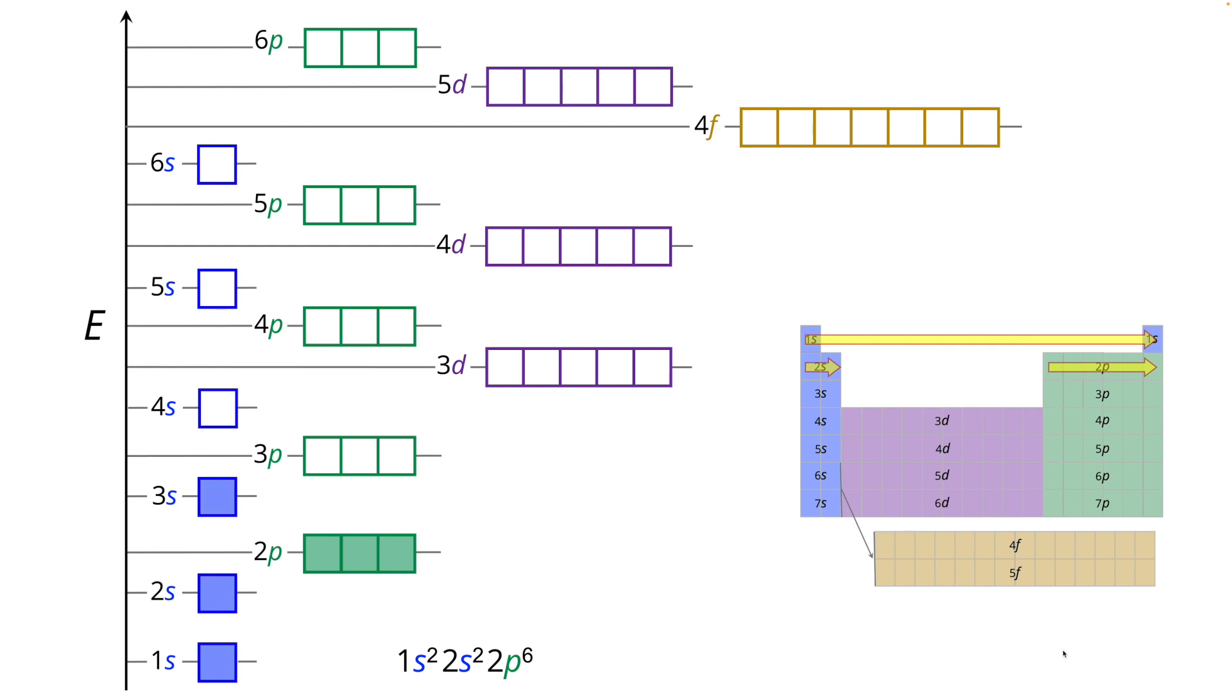We now move to the third row of the periodic table and the 3s subshell fills first, 3s2. The 3p subshell fills next, 3p6.